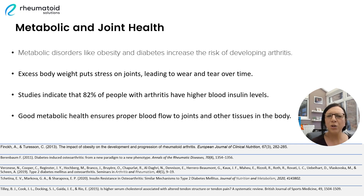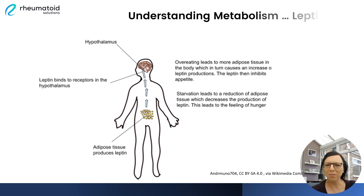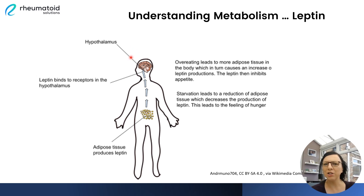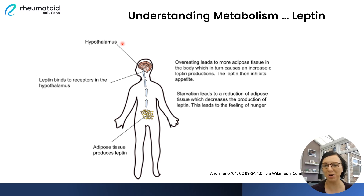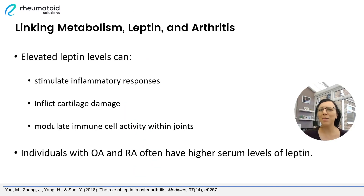All of this research suggests a clear link between our metabolic health and our joint health. Maintaining good overall metabolic health is actually crucial to ensure proper blood flow to our joints and other tissues within the body. Now, let's talk briefly about leptin. Leptin is one of our body's most powerful metabolic hormones, produced within our fat cells. It acts as a messenger, signalling to the brain about our energy stores, and plays a vital role in regulating our appetite and energy balance. Leptin also has an impact on arthritis — in arthritis patients, imbalances in leptin levels can actually contribute to increased pain and inflammation in the joints.